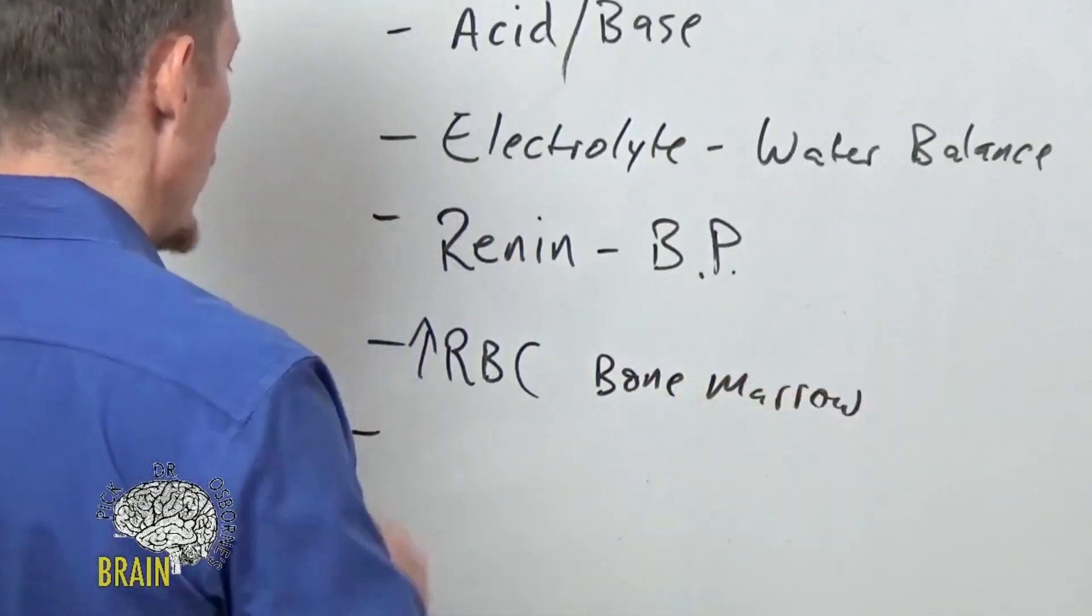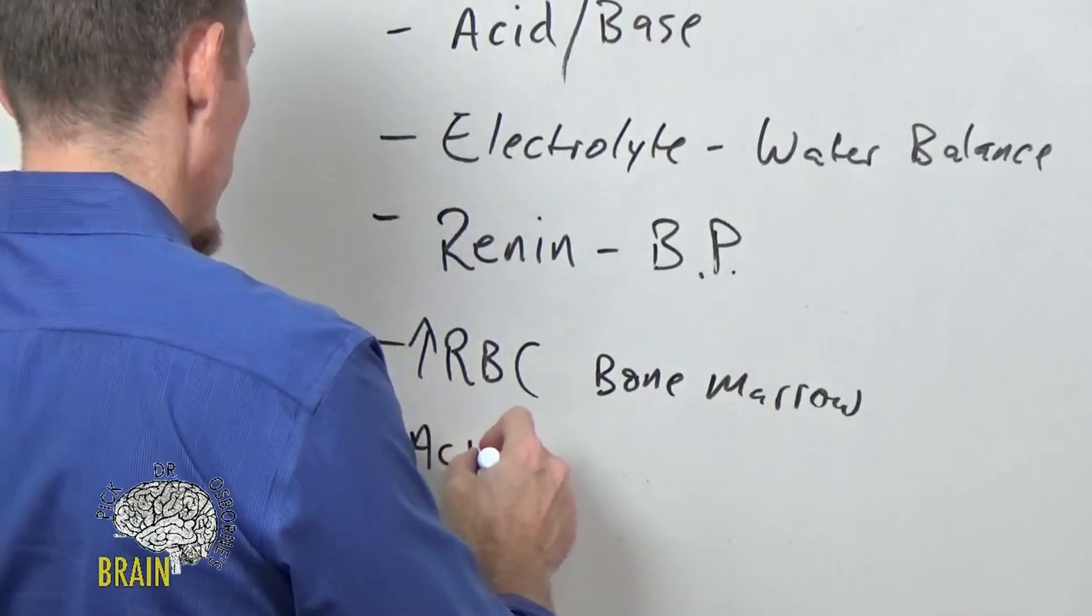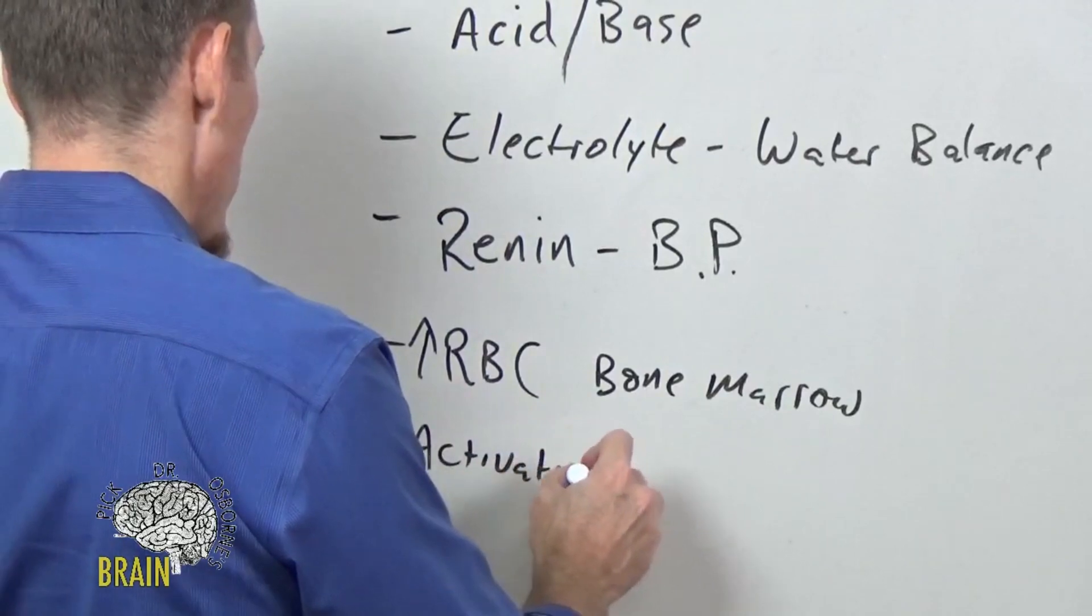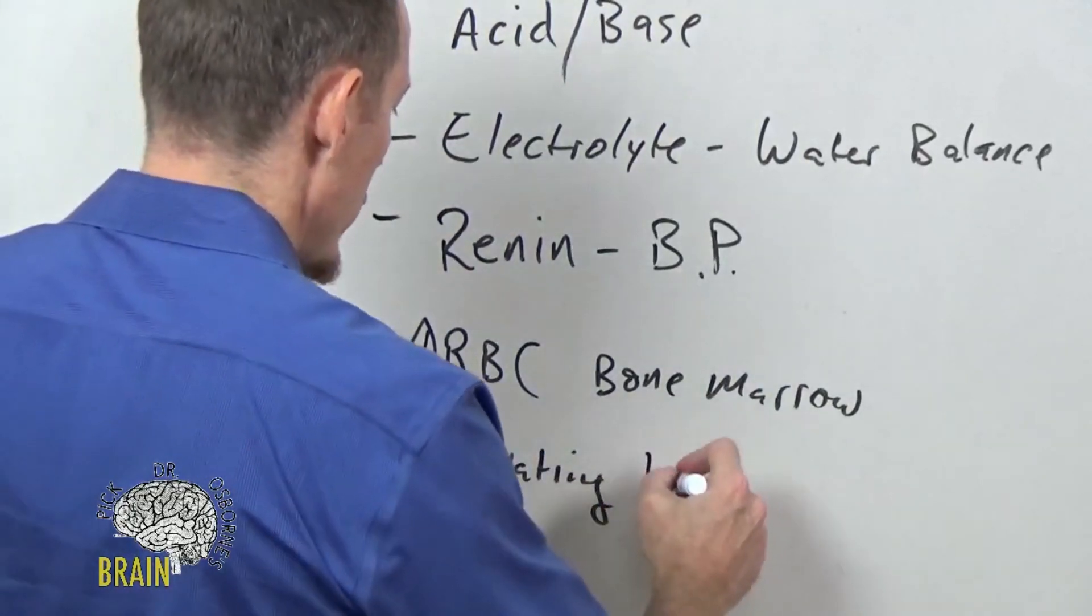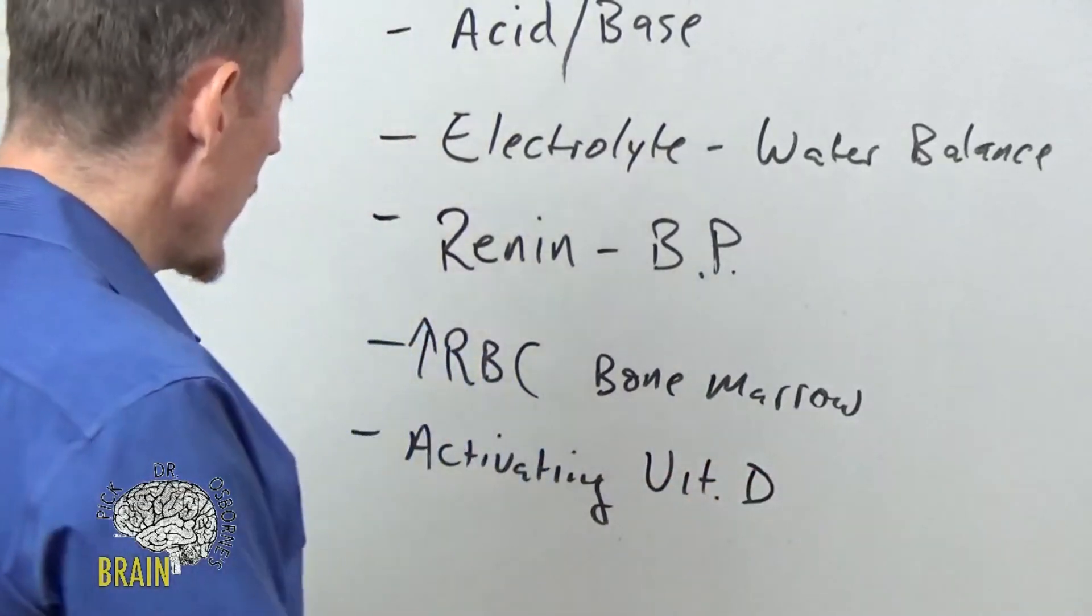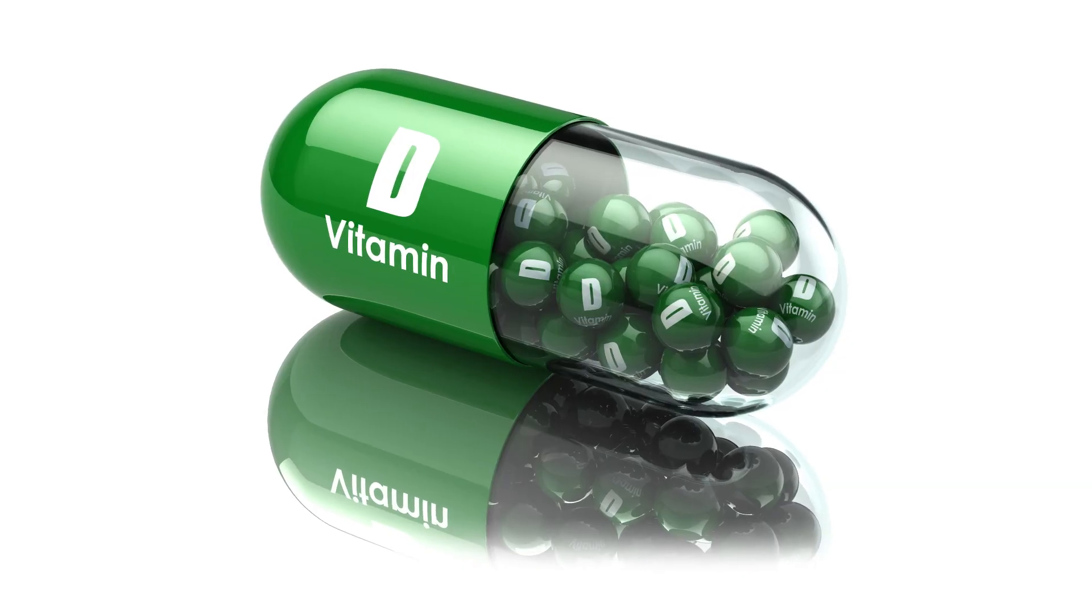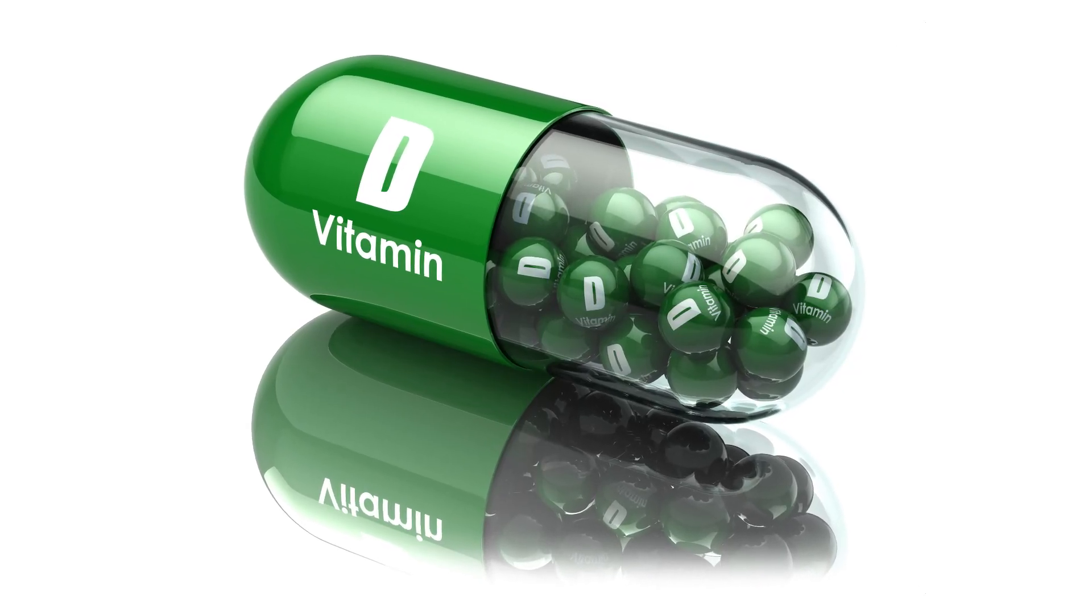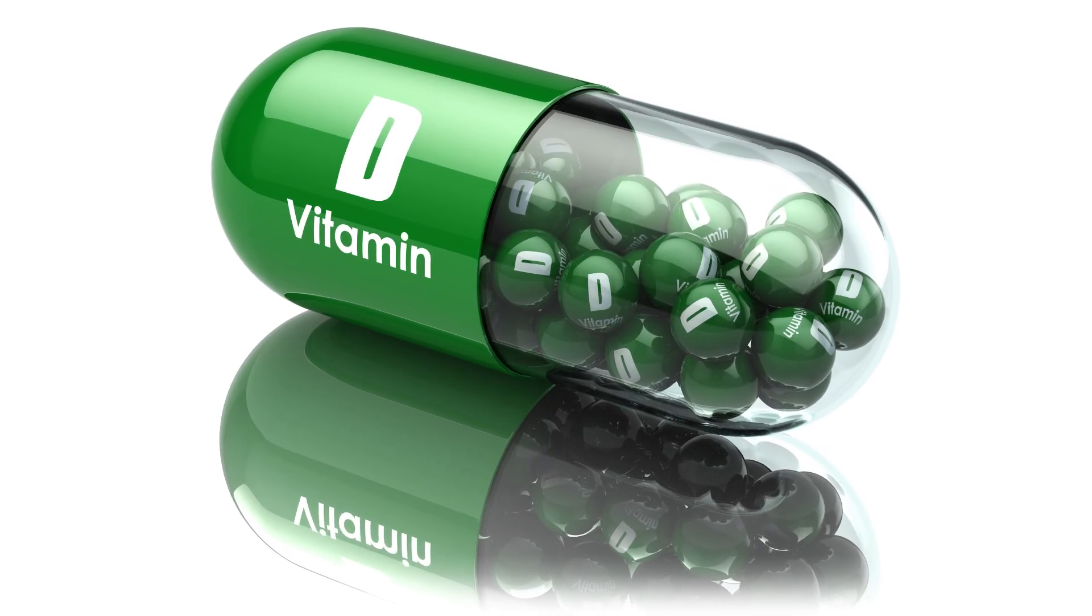The kidney also plays a role in activating vitamin D. Vitamin D has to be activated by your liver and your kidneys. If you don't activate that vitamin D, then what can happen is—one of its main functions is it tells your intestinal lining to absorb calcium from the food that you eat. So when your vitamin D levels are really low, your bone density starts to drop or you can develop problems.